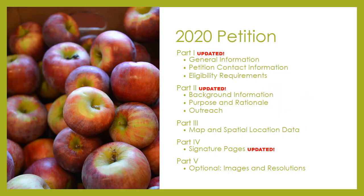Our petition consists of five main parts. Parts 1, 2, and 4 have been updated for this petition cycle, while parts 3 and 5 remain the same process as previous years. In the following slides, we will go through the updates and different tips and tricks on how to prepare your petitions.